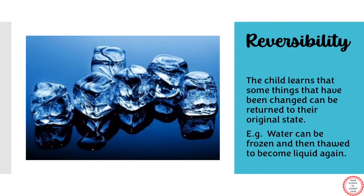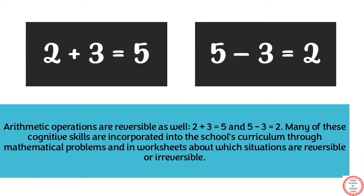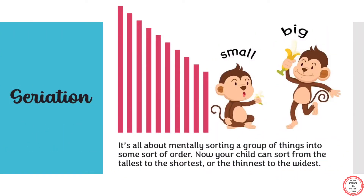By the concrete operational stage, the child starts understanding that actions can be reversed. For example, water can be frozen and again thawed to become liquid. In mathematics too, children start showing good understanding of basic calculations at this age. Moving on to the next characteristic: seriation. As the word itself suggests, resembling a series, seriation is putting objects into a series. In the pre-operational stage, the child lacks this ability, but now one can easily arrange objects from tallest to shortest or thinnest to widest.